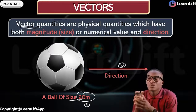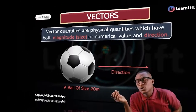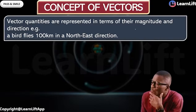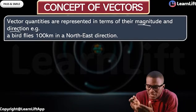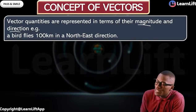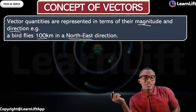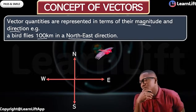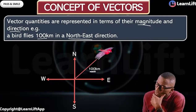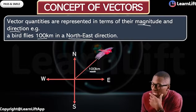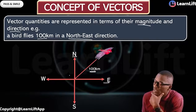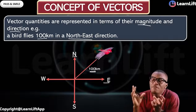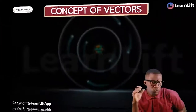Unlike scalar quantities, vector quantities can be represented in terms of magnitude and direction. For example, a bird is going to fly 100 kilometers in the northeast direction. Looking at the cardinal points — north, south, east, and west — you can see the bird's path showing both the distance covered, 100 kilometers, and the direction: northeast. That's why every vector has both magnitude and direction.